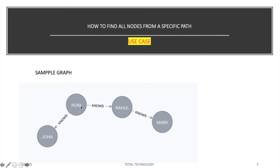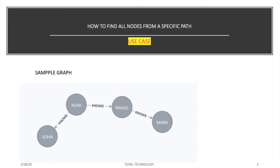Let's say it starts with Ronnie and ends with Mark, and there must be two relationships, and the name of the relationship is KNOWS. That is actually creating a path. For example, if it should start with Ronnie and end with any other node, and in between there must be one KNOWS relationship, there are two possible paths: Ronnie to Rahul or Ronnie to John. But if I say find a path where it starts with Rahul and ends with Mark with only two KNOWS relationships, there is no such path because Rahul and Mark are connected with only one relationship, so our condition fails.